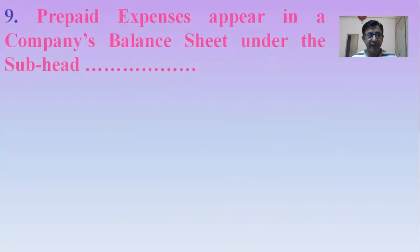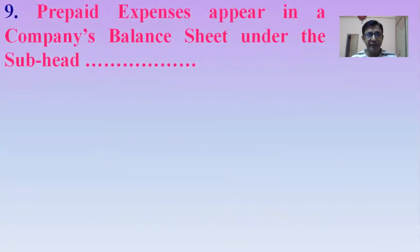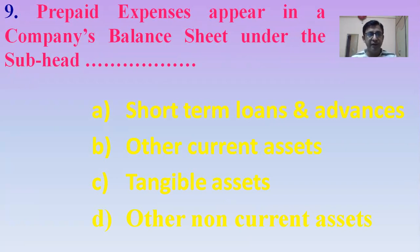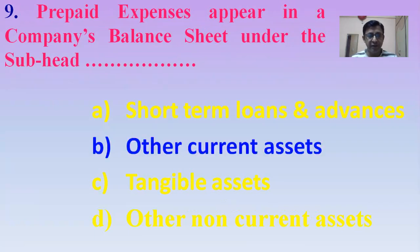Next MCQ: Prepaid expenses appear in a company's balance sheet under which subhead? Options: Short-term loans and advances, Other current assets, Tangible assets, or Other non-current assets. The right answer is Other current assets — prepaid expenses will be shown on the asset side under the subhead called Other current assets.